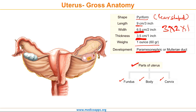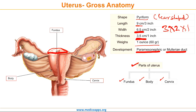Let's now discuss these parts one by one in the image. The fundus is the top of the uterus, above the entry point of the uterine tubes. The body is the usual site for implantation of the blastocyst. The cervix is the lower part of the uterus linking it with the vagina, and is structurally and functionally different to the rest of the uterus.